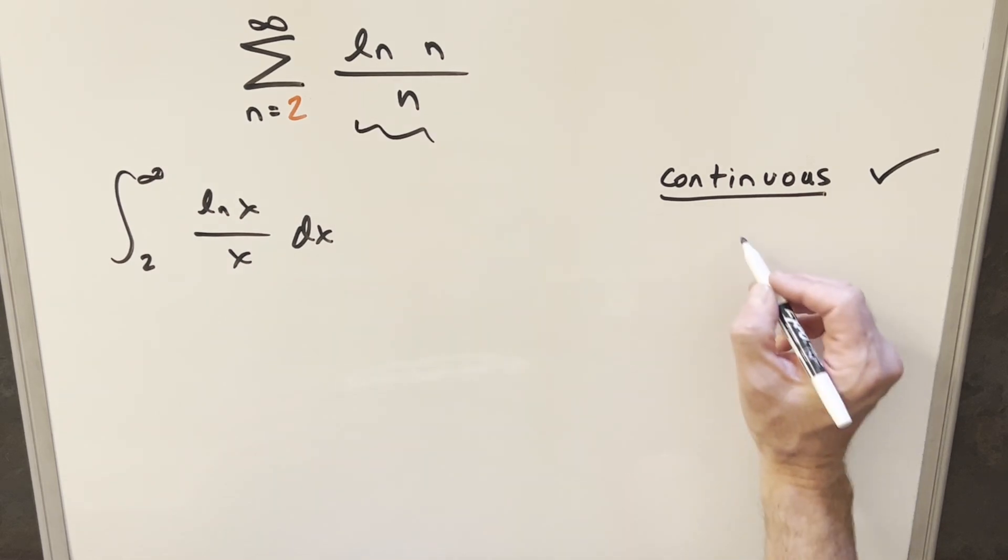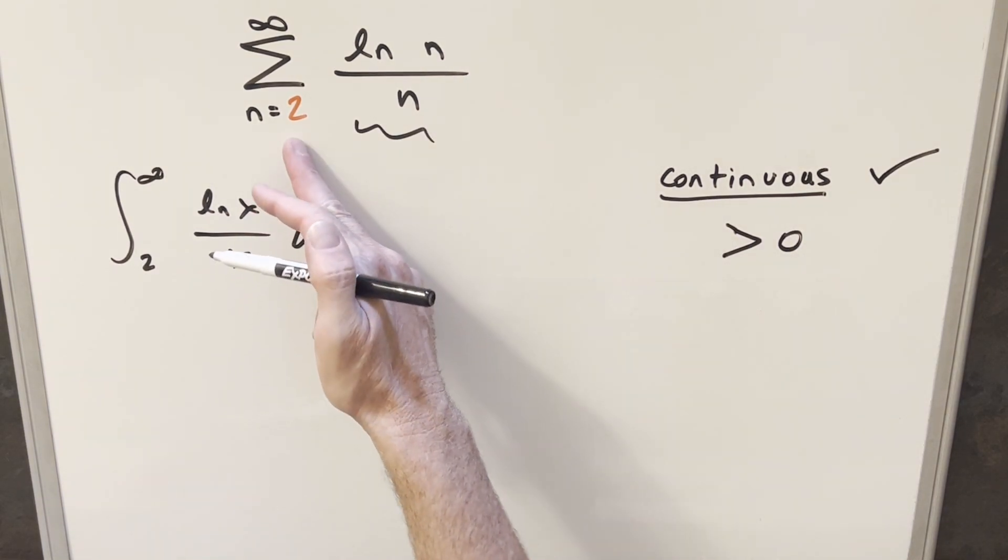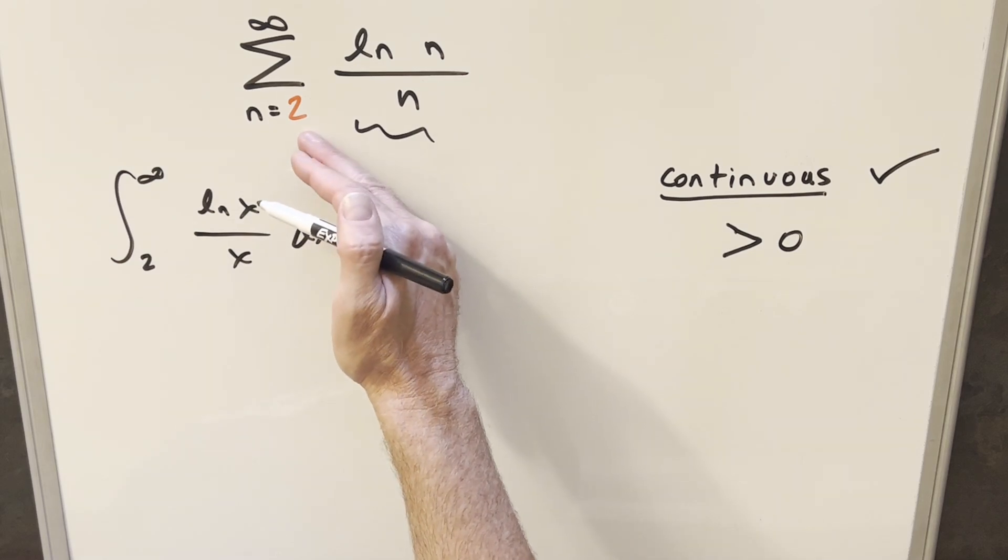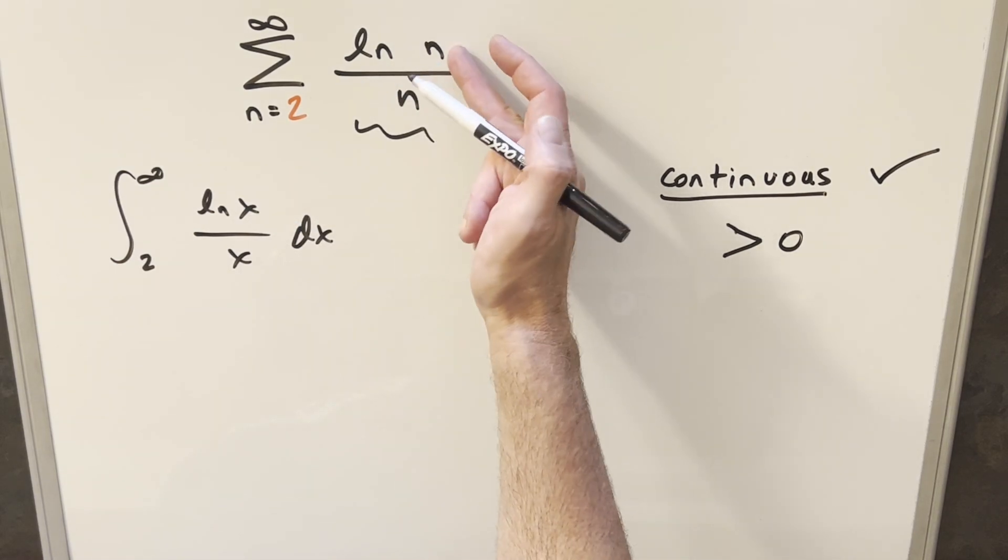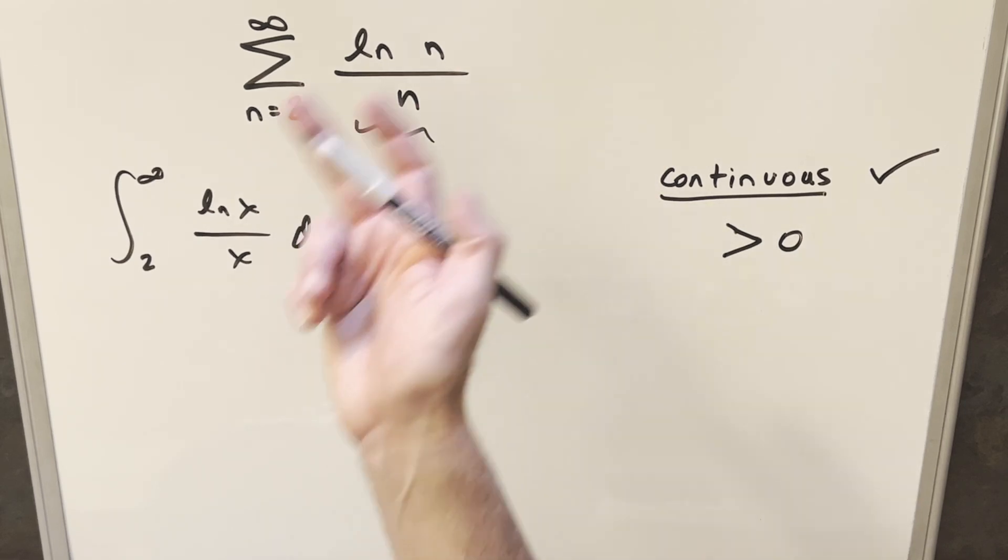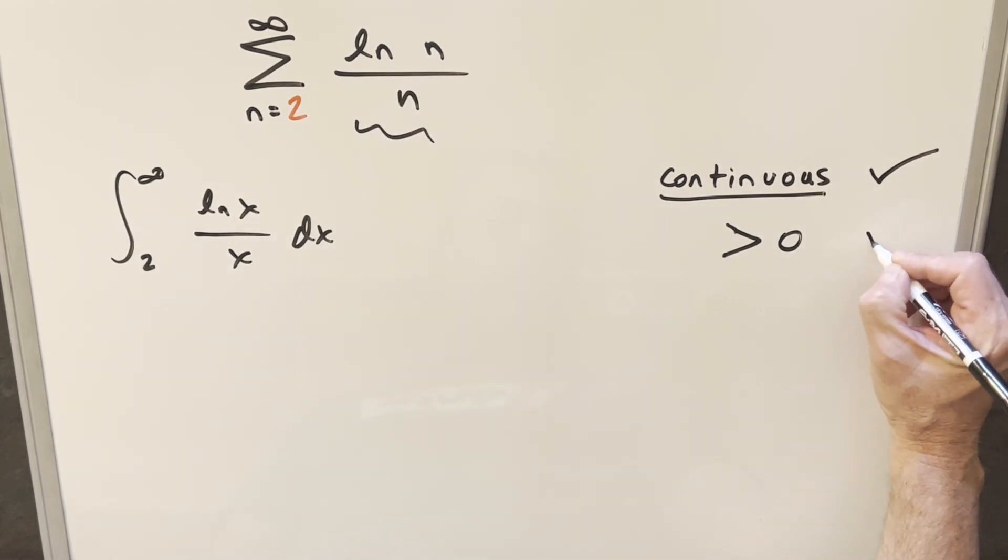Then we want to know, is this thing always going to be greater than zero? This is also no problem because clearly n's always going to be positive, right? It starts at 2. So the denominator is positive. And then for natural log, all we need is n to be greater than 1. So at 2, it's positive. So positive, no problem.